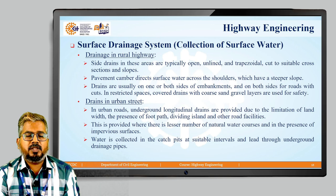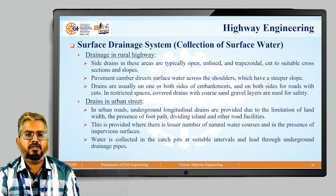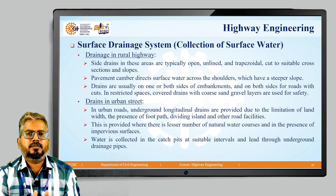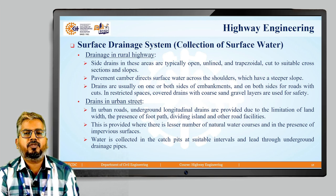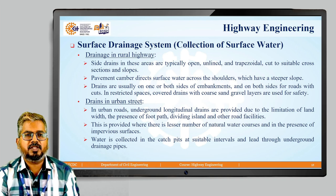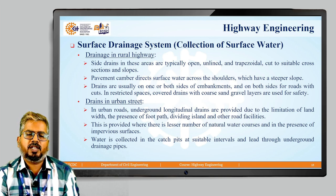Drains in urban streets are slightly different. In urban roads, underground longitudinal drains are provided due to the limitation of land width available and the presence of footpaths, dividing islands, and other road facilities. This is provided where there is a lesser number of natural water courses and in the presence of impervious surfaces. Water is collected in catch pits at suitable intervals and led through underground drainage pipes.